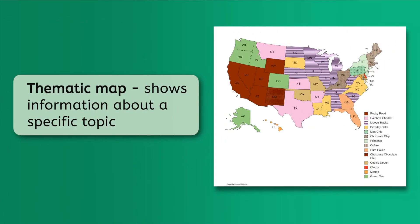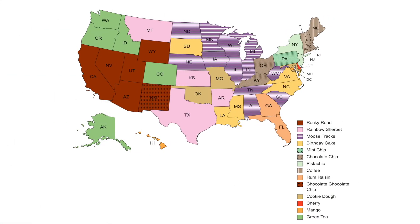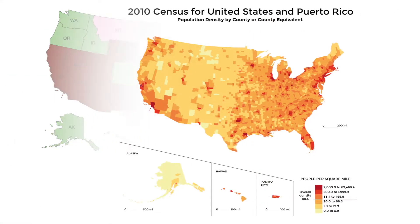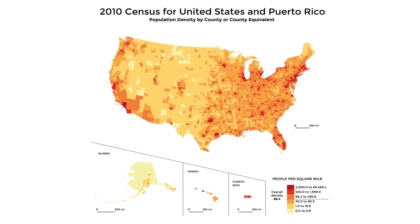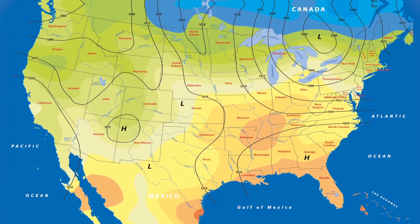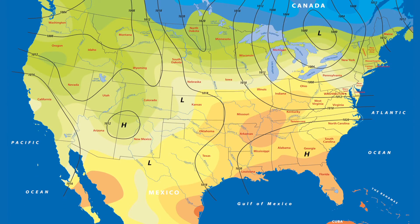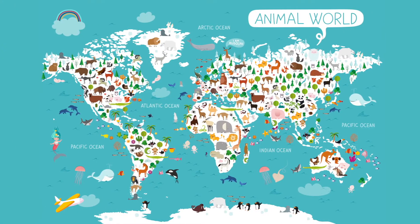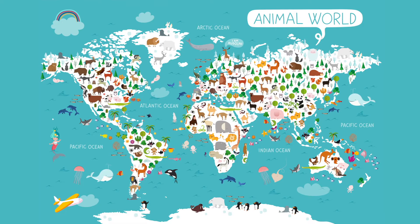So physical maps tell us about the Earth's surface, and political maps help us find specific places. But our last kind of map helps us learn all kinds of other things. A thematic map shows information about a specific topic, like favorite ice cream flavors by state. How fun is that? But thematic maps aren't just for fun. They also show us the answers to questions a lot of people have, like how many people live in the United States, or what's the temperature of each area, and even what types of animals are most common in each country.